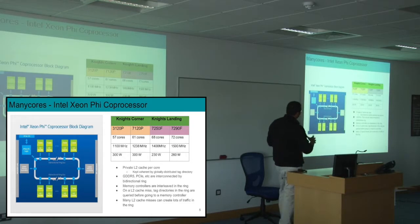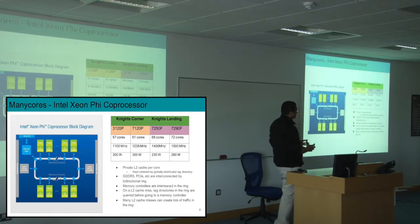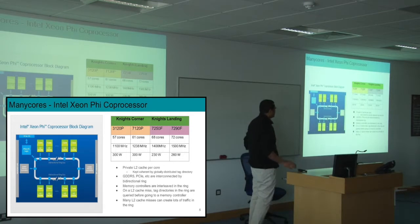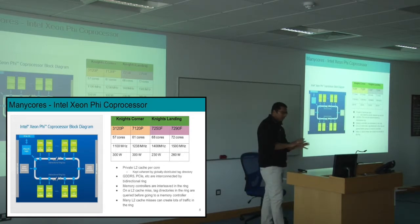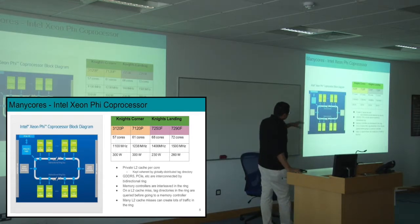On an L2 miss, the tag directory on the ring is queried, and if the miss isn't resolved there, it goes to the memory controller and then to memory. If you have a multi-threaded application using all the cores and it's very compute-intensive, it's going to create lots of traffic. In this case, again, tight integration creates too much contention for shared resources — in this case, the ring.